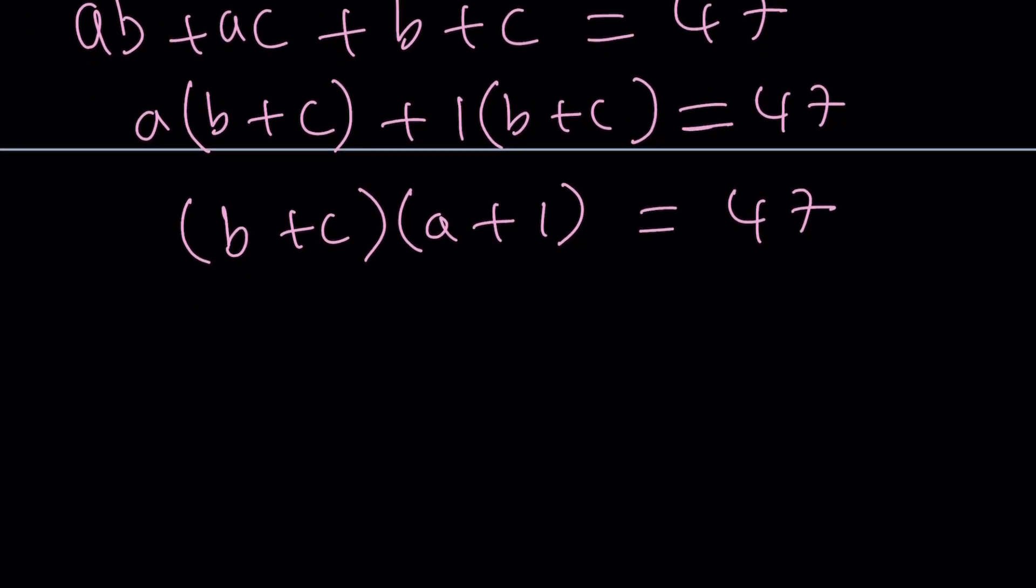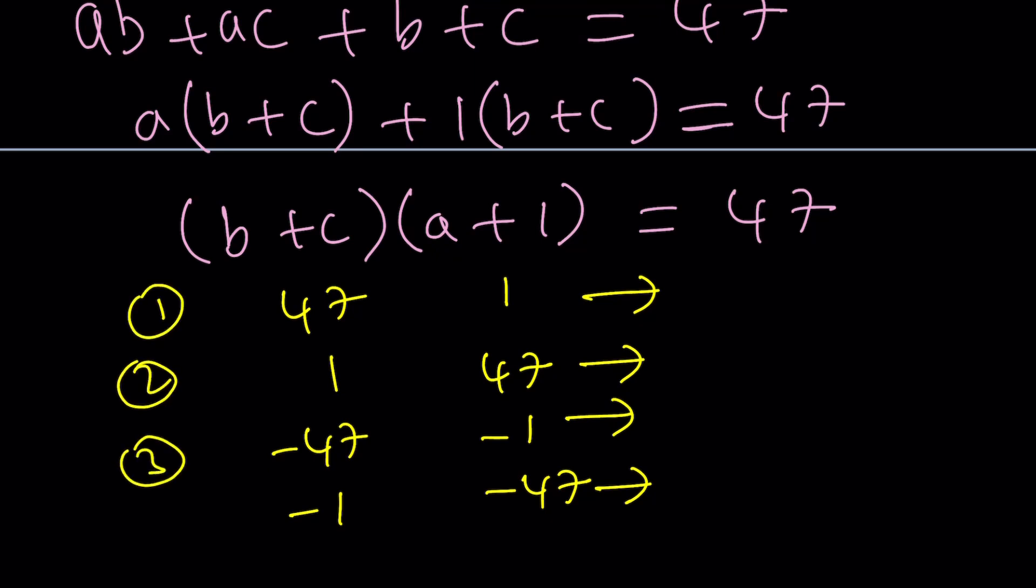So what does that mean though? Since A, B, C are integers, B plus C and A plus one are both integers. So we're looking for factors of 47, but 47 is prime. So there are four cases: 47 and one, one and 47, negative 47 and negative one, and vice versa. We're going to go through all these cases, but notice that the second one gives you the value of A directly. So let's go ahead and find the A values from here so we can easily check the results. So I'm going to call these cases 1, 2, 3, 4. Let's number these cases because we're going to check each one separately.